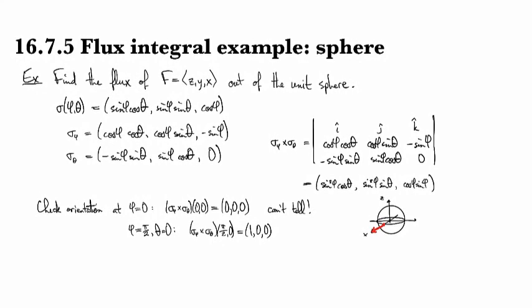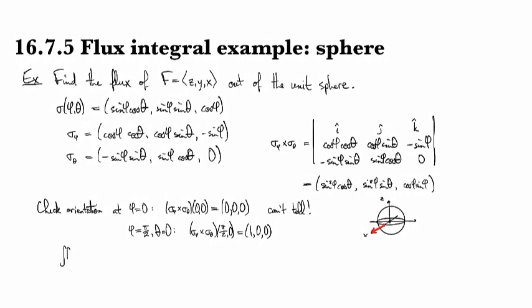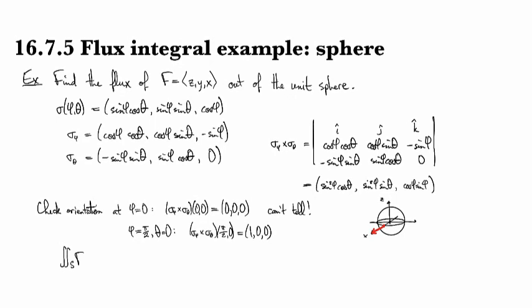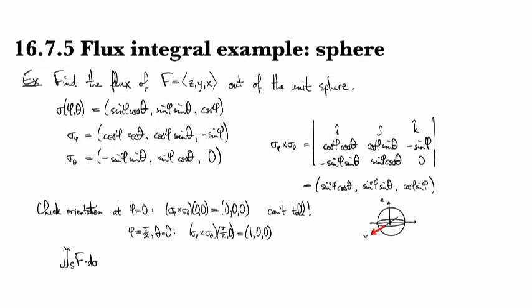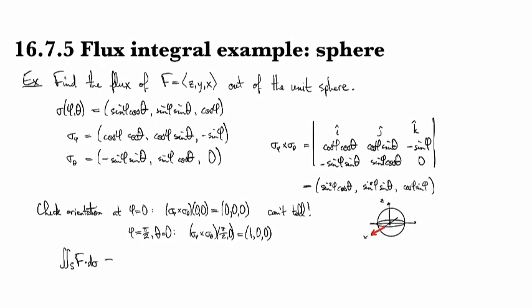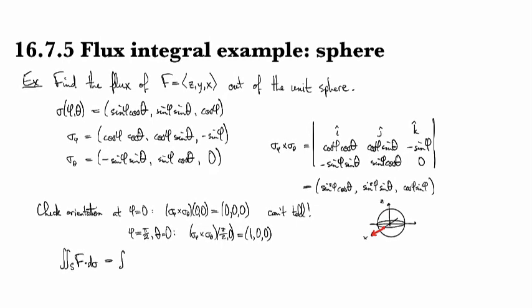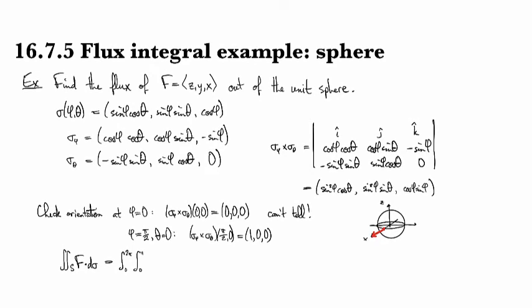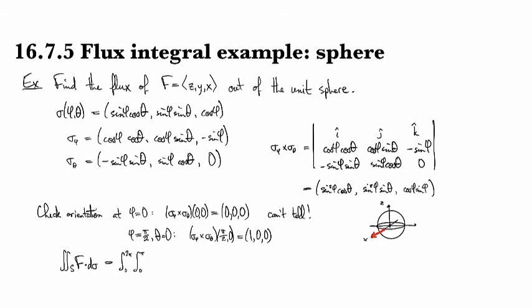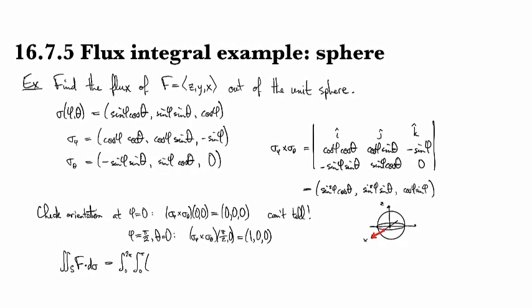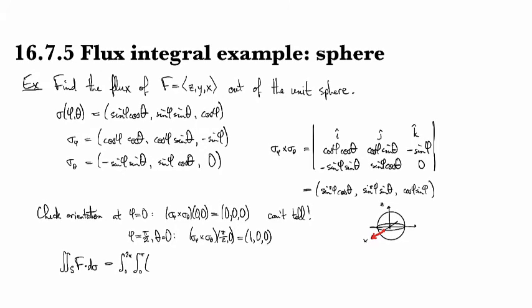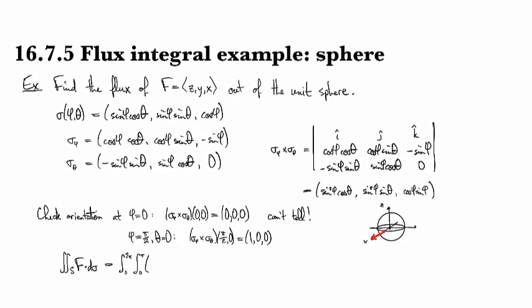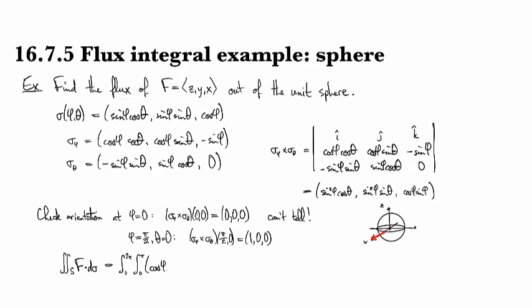All right, orientation is correct. So then we take the double integral over s of f dot dσ, and so in terms of our parameter domain, we're going to take θ from zero to 2π, and φ from zero to π, and then we've got, let's see, so z, y, x under this substitution is going to be cosine φ.